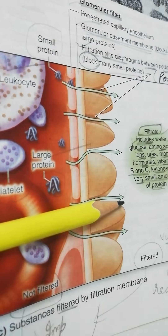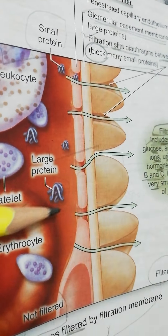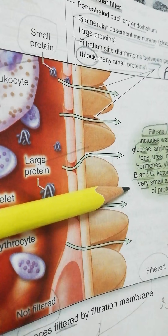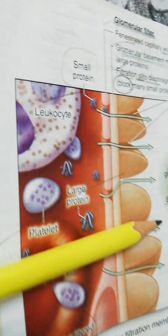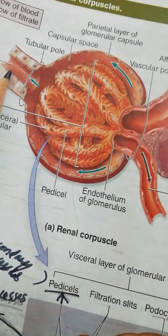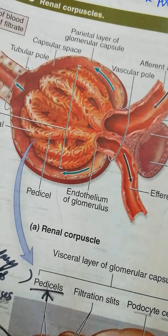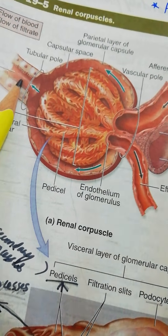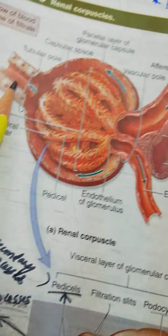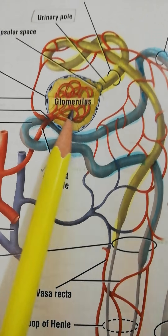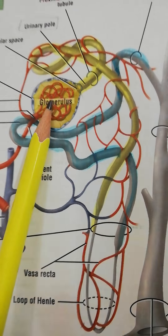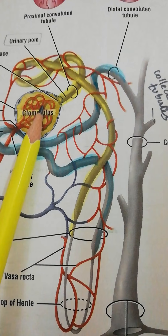In this way, the ultrafiltrate is produced. We can differentiate between plasma and the ultrafiltrate that has now entered the proximal convoluted tubule to begin the process of becoming urine.